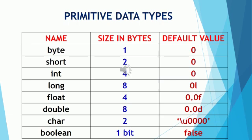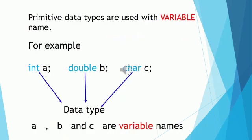The table shows the default values: byte, short, int and long have a default value of zero. Float has a default value of 0.0f. Double has a default value of 0.0d. The default value of char is shown as a special character, and boolean has a default value of false.